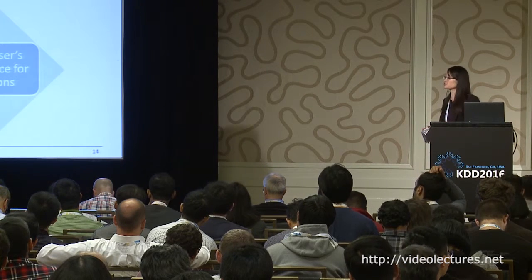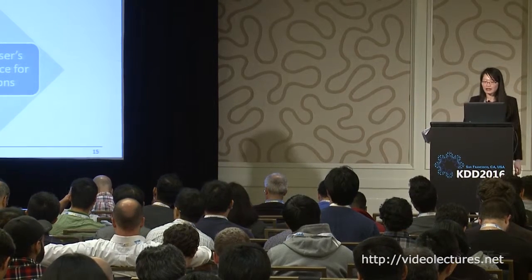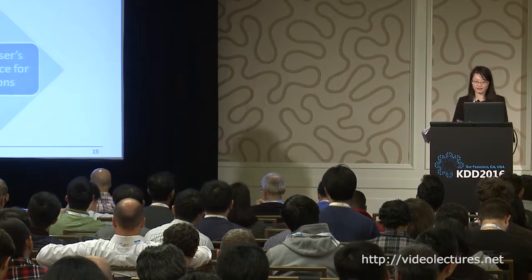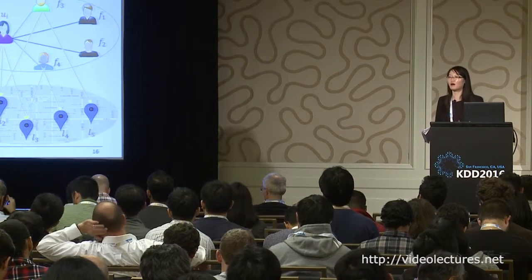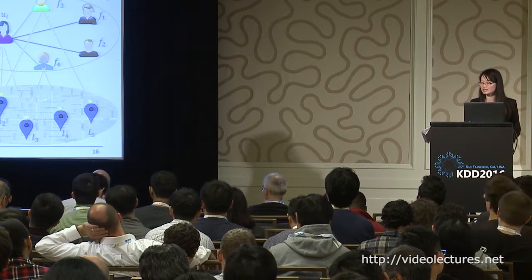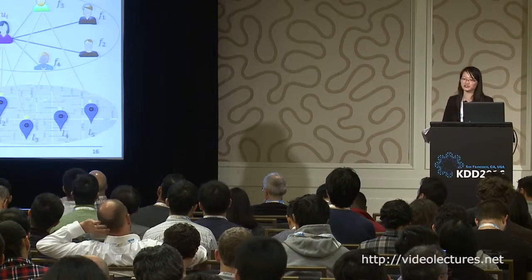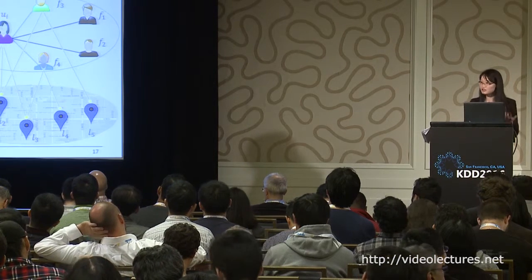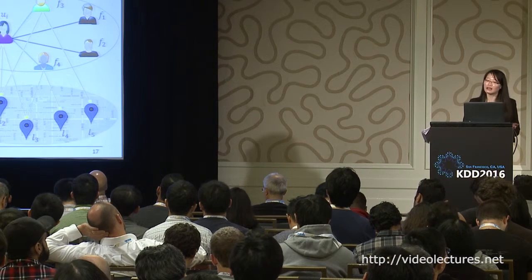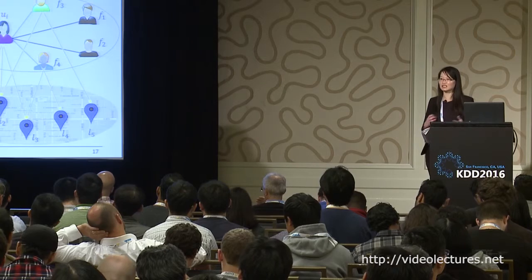Motivated by this, we propose a two-step framework. In the first step, we want to learn a set of potential locations from friends. In the second step, we want to learn users' accurate preference for locations based on the learned potential locations. In the first step, we study three types of friends for each user. Suppose this is the target user — those users who socially connect with her we call social friends, those who have visited the same location we call location friends, and those who live very close to the target user we call neighboring friends.